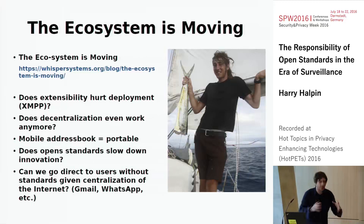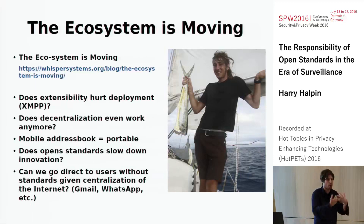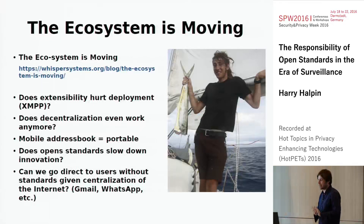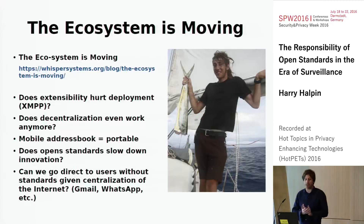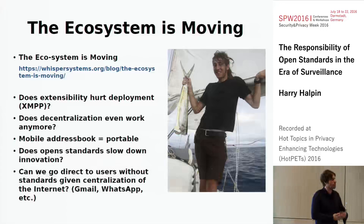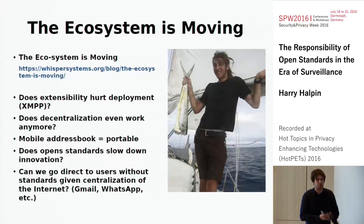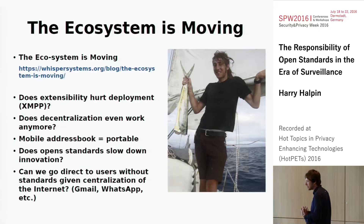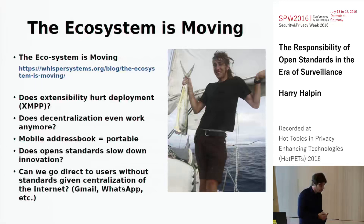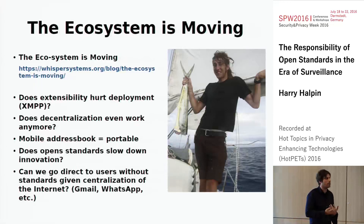But as the internet centralizes more and more, and as more people are inside proprietary platforms, is decentralization even a realistic strategy? Maybe we already have the decentralization we need — everyone has a mobile phone with an address book they can move between Android and other devices. Maybe that's the portable social graph we've been hoping for.